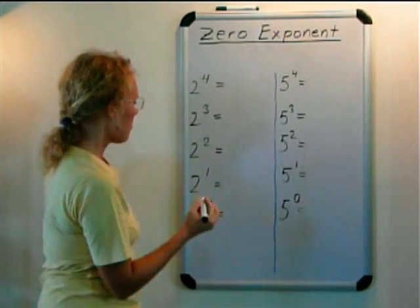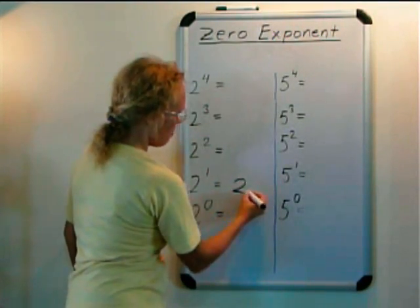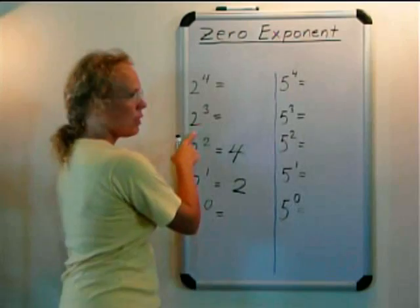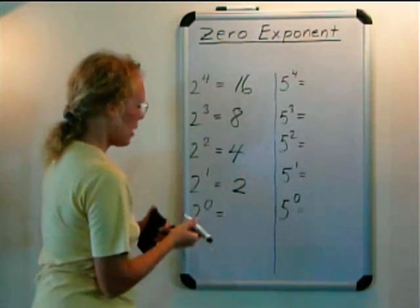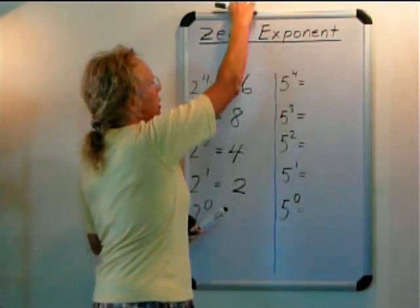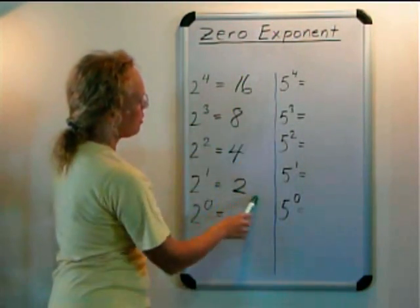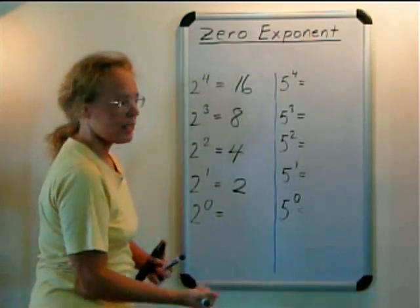And then start working with them from the easiest one up like this. Students already know that 2 to the third is 2 times 2 times 2 so they can fill this in. And after that we're going to look at the pattern from up down, what happens at each step.